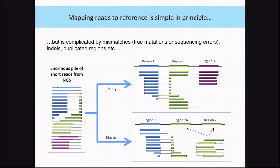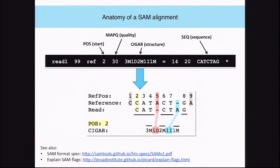Essentially we're trying to see what region on the reference each read matches most closely. This is complicated by the fact that the sample genome is different from the reference genome — that's why we're here, we're trying to see what the variants are. For example, if we have three regions that all look very distinct, any given read is easy to place. But if there's a duplicated region of the genome, a read from region 2a or 2b will map similarly to both, so we have to decide where to place it and we're less certain in our final decision.